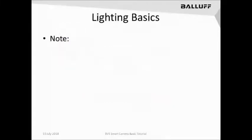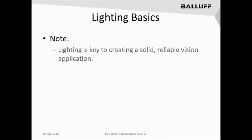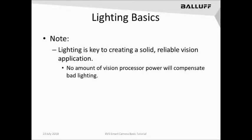A quick note about lighting and machine vision. No matter what people may say, the reality is that in order to build a reliable and solid vision application, you must start with solid key lighting of the features you wish to see in an object or a part. There is no amount of vision processing power in any device that can compensate for poor lighting or changing lighting conditions. It's critical to make sure that the lighting conditions best highlight the features you're looking to see, and that they do not change or have the ability to be changed by external forces.